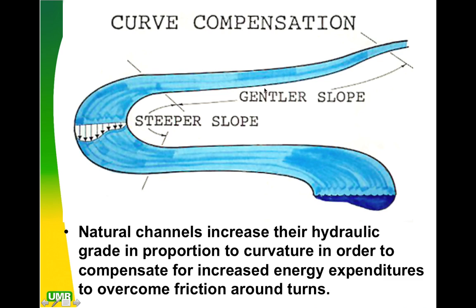As slopes get steeper, the river moves faster and is able to cut into the ground more easily. We begin to see meanders, and in those meanders there are deposition sites and cut bank sites where erosion is happening. Water moves much faster on the outside of a meander than on the inside, so erosion happens on the outside and deposition happens on the inside.